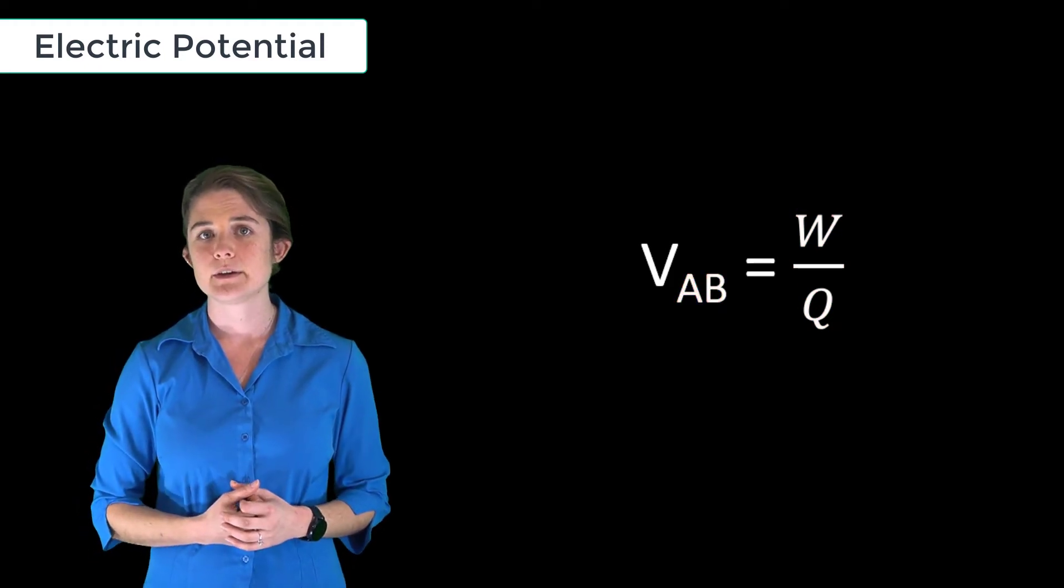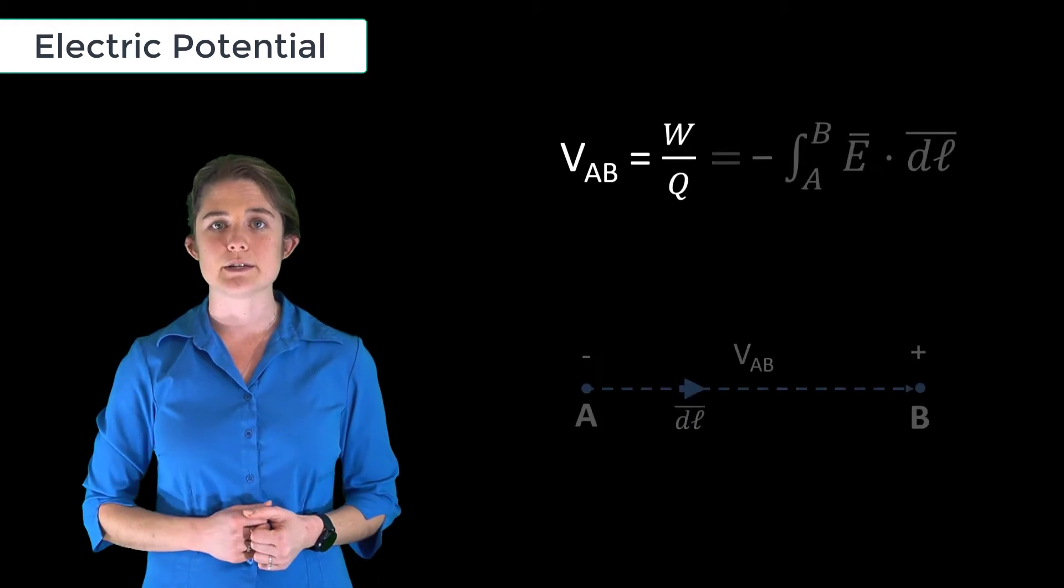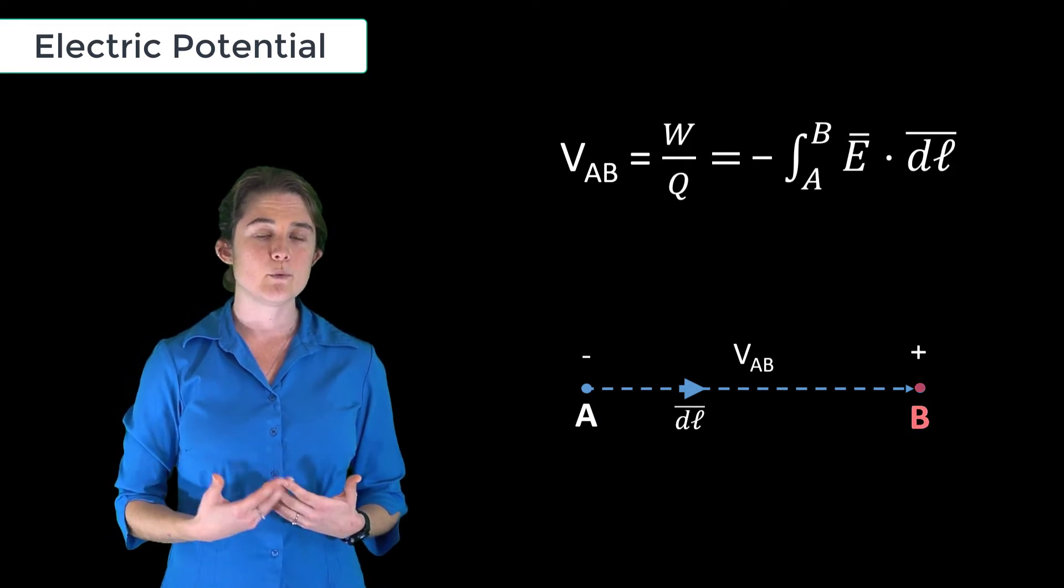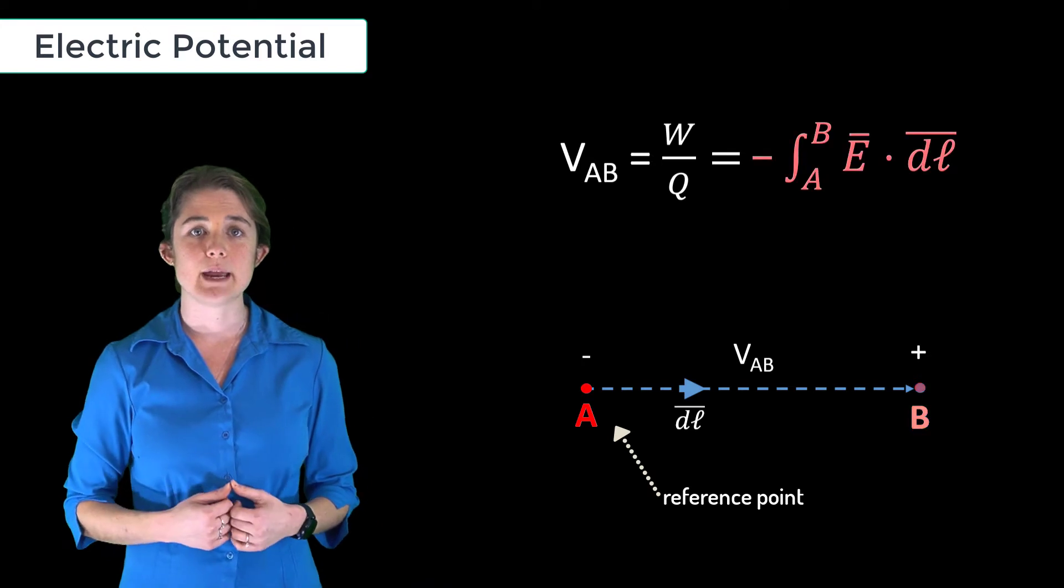Using our definitions of work and force, we can rewrite this equation like this. This means that the voltage measured at point B with reference point A is equal to negative the integral from A to B of the electric field along the path.